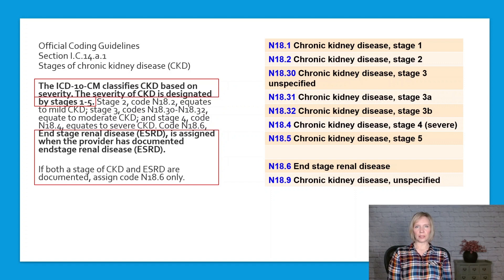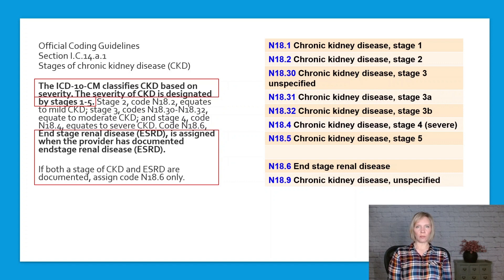Additionally, there is a code specifically for end-stage renal disease. Code assignment is based on the physician documentation of the stage. If the stage is not clearly documented in the medical record, there is a code available for CKD unspecified.